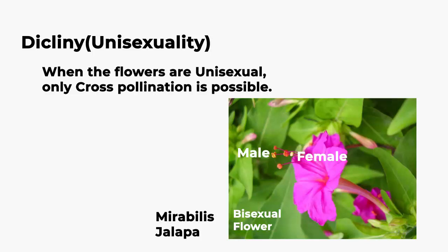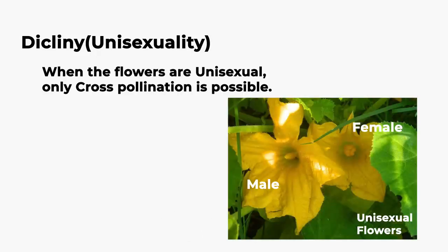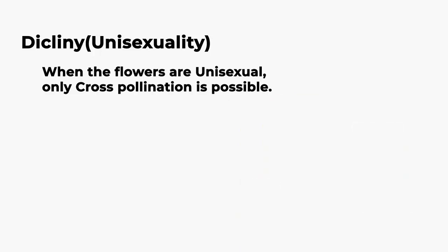But if the flowers are unisexual — that is, if the flower has only one sex organ, whether male or female — the transfer of pollen must be from the other flower. So only cross-pollination is possible in unisexual flowers. Therefore, dicliney or unisexuality is the first adaptation. There are two types: monoecious and dioecious.